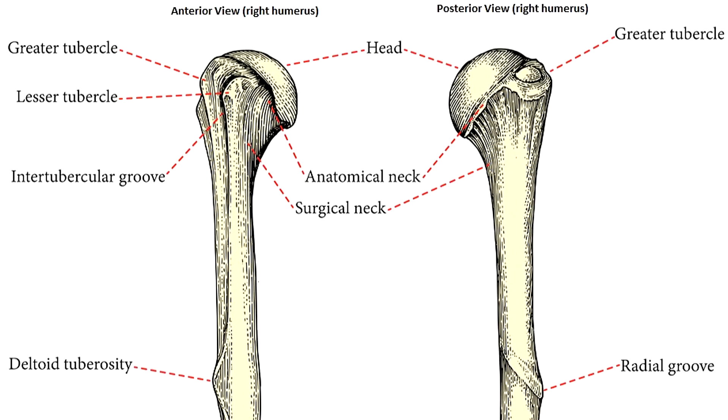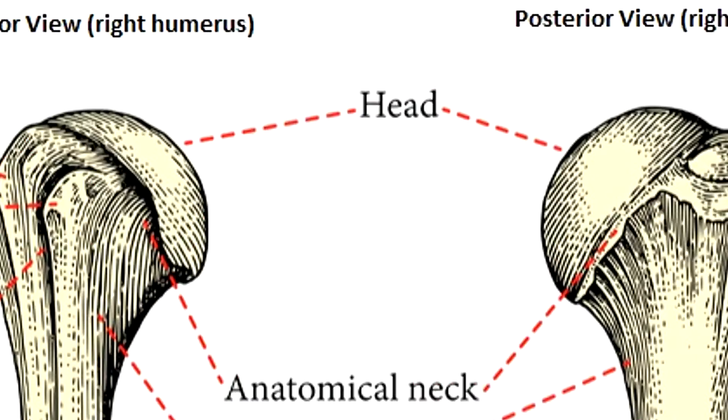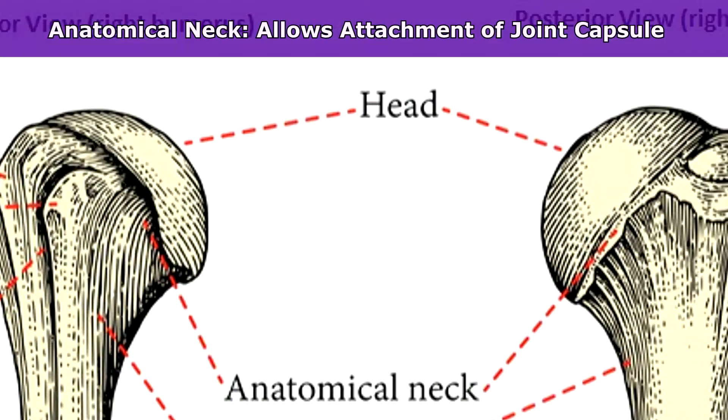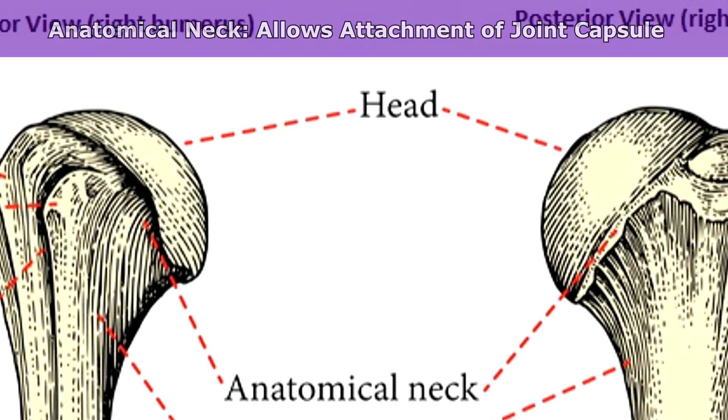Immediately below the head, we have the anatomical neck of the humerus, which is a groove that provides a place for the shoulder's joint capsule to attach.